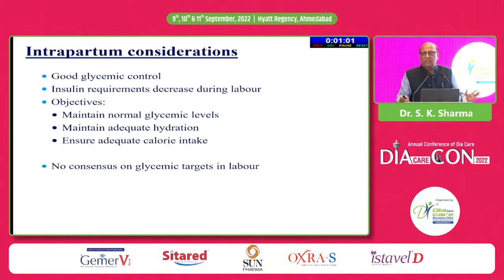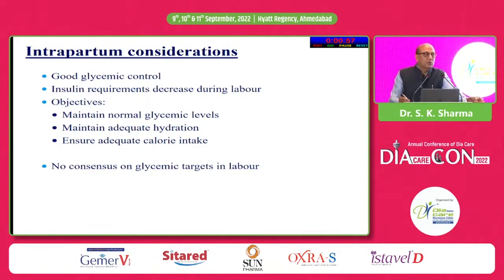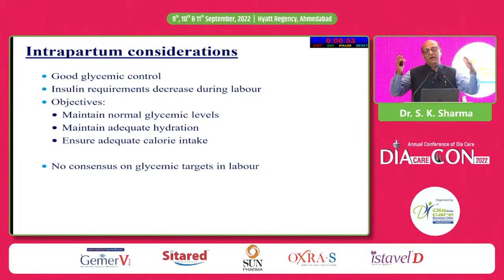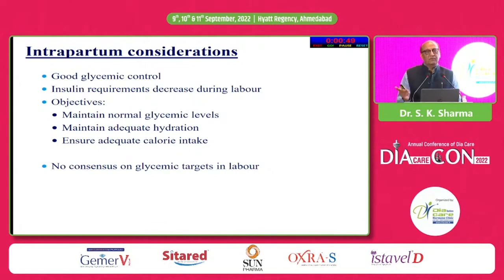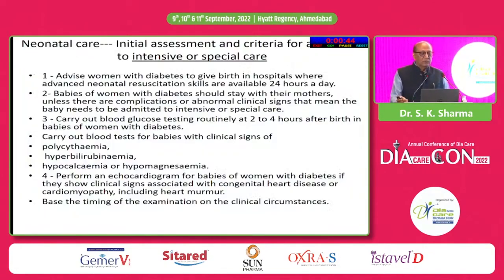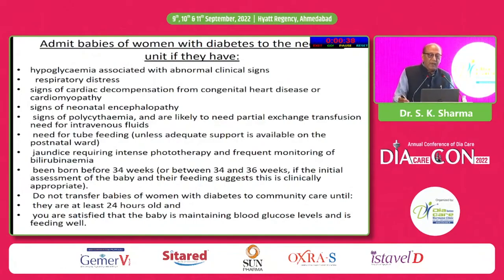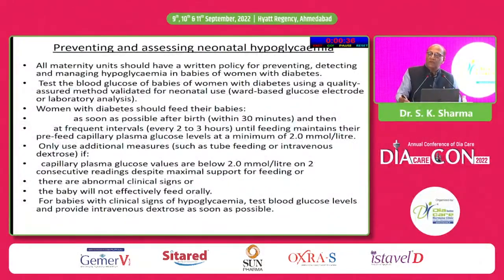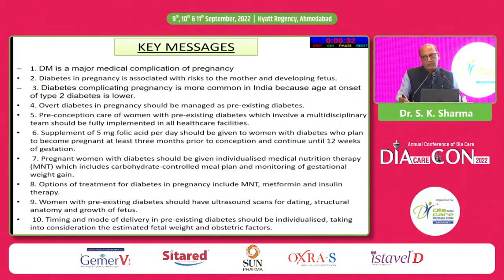Intrapartum consideration: we want tighter control during labor because if blood glucose is very high, fetal blood glucose will be high and fetal insulin levels will be high. Just after delivery, the neonate will develop severe hypoglycemia. So we have to maintain tighter control. Neonatal care is very important, and particularly hypoglycemia must be prevented in the newborn.